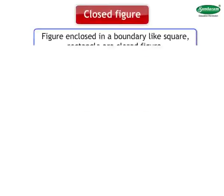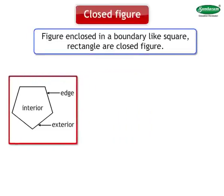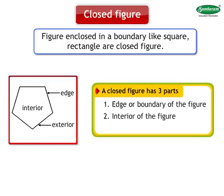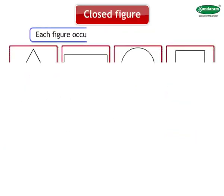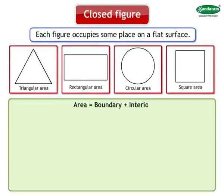What is a closed figure? A figure enclosed in a boundary, like a square or rectangle, is a closed figure. A closed figure has three parts: Number 1 — edge or boundary of the figure; Number 2 — interior of the figure; Number 3 — exterior of the figure. Each figure occupies some place on a flat surface.